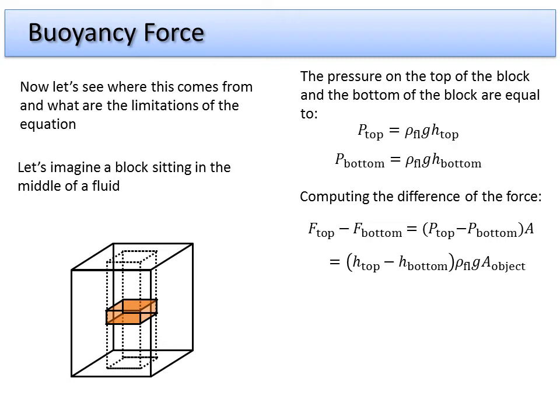And we substitute in. We know that the pressure on the top is equal to the fluid times g times the height. Pressure on the bottom is the fluid times g times its height from the surface down to the bottom surface. And again, we keep the same area. It's this area of the shape that we're looking at. So, the area of the object.